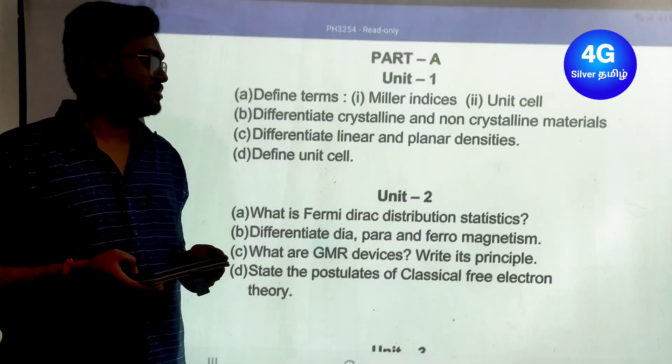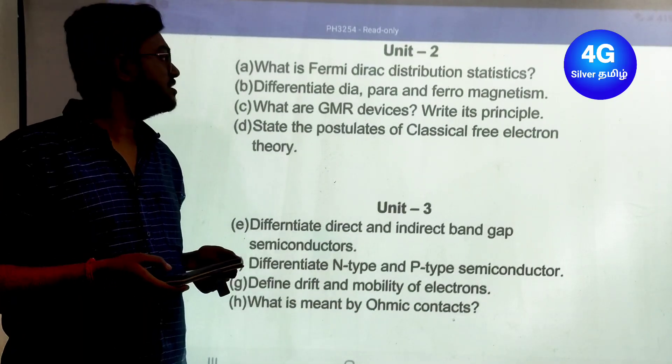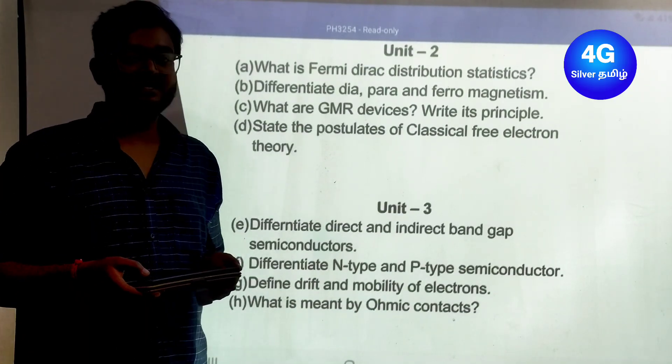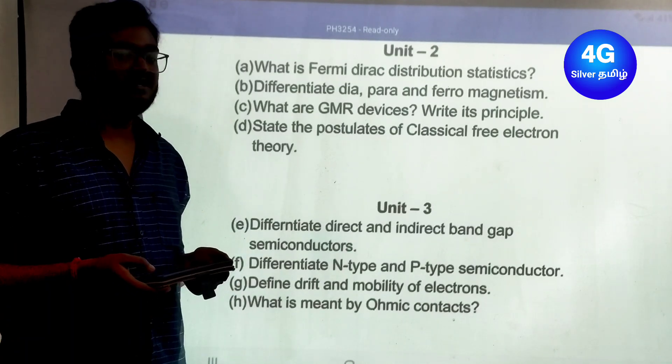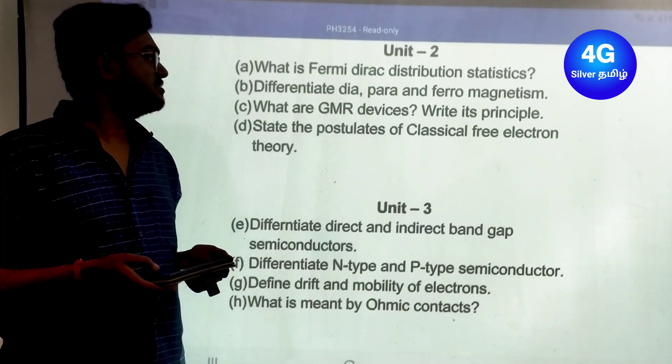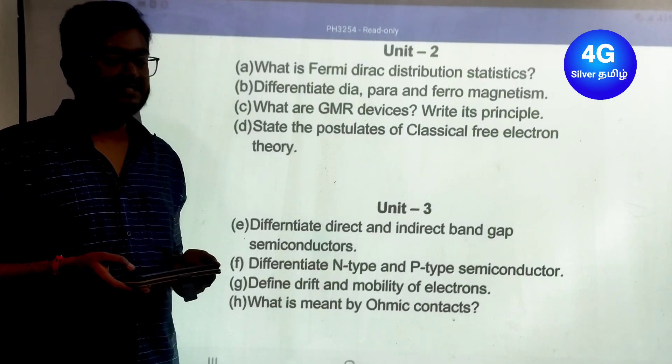Next, Unit 2 important Part A questions: What is Fermi-Dirac distribution statistics? Differentiate dia, para, and ferromagnetism. What are GMR devices? Write its principle.